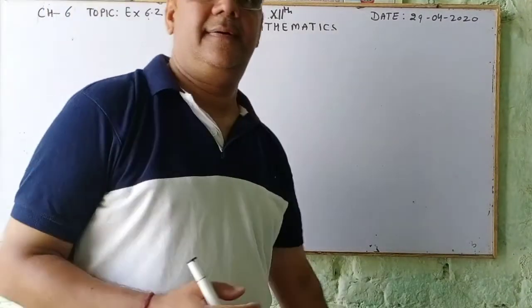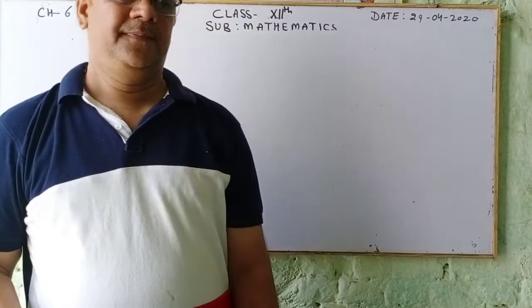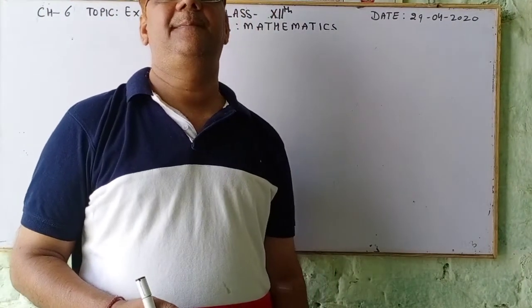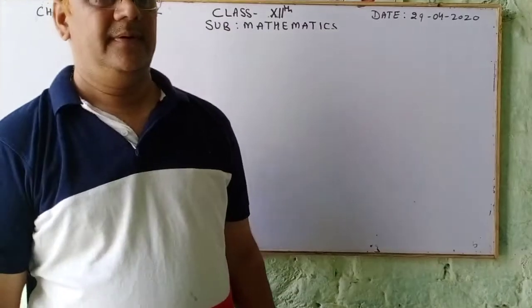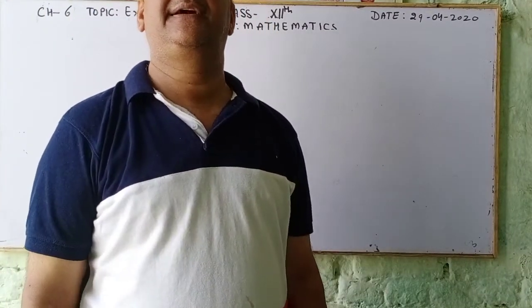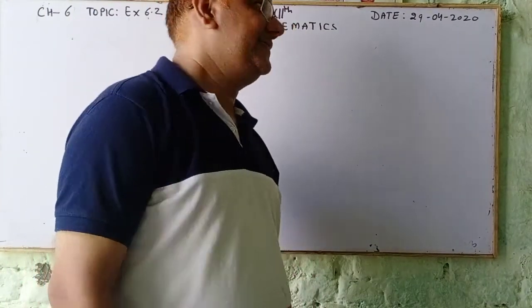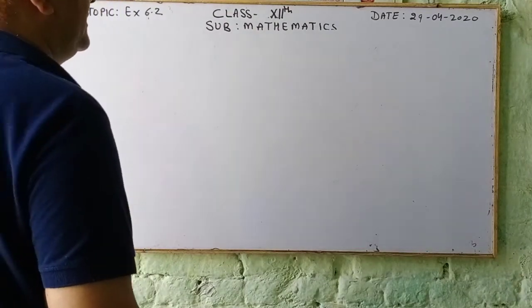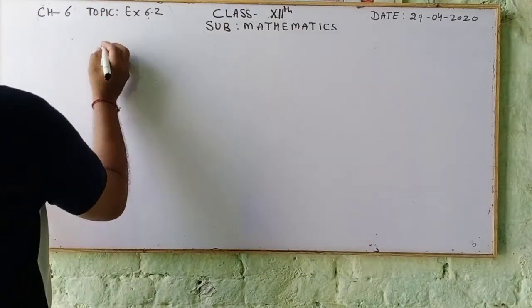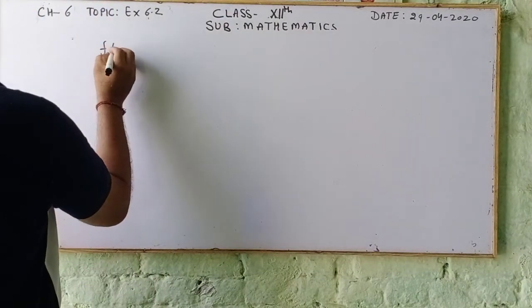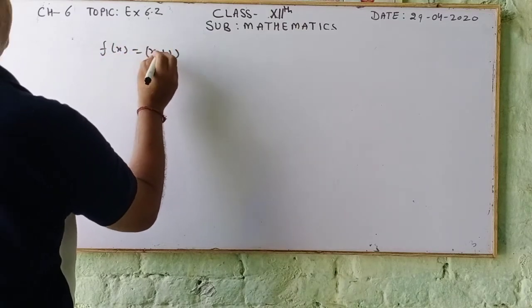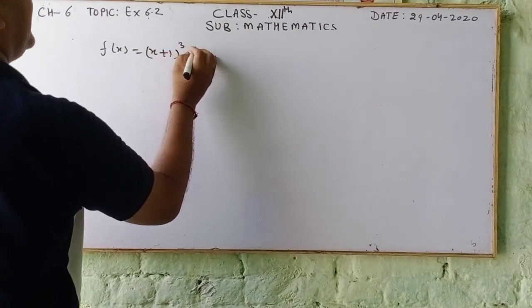Hi students, I will take Exercise 6.2 from Plus 2 Mathematics. This exercise is related to increasing and decreasing functions. Let us start Exercise 6.2 — we are taking some questions. First, we take f(x) equal to (x+1)³ multiplied by (x-3)³.